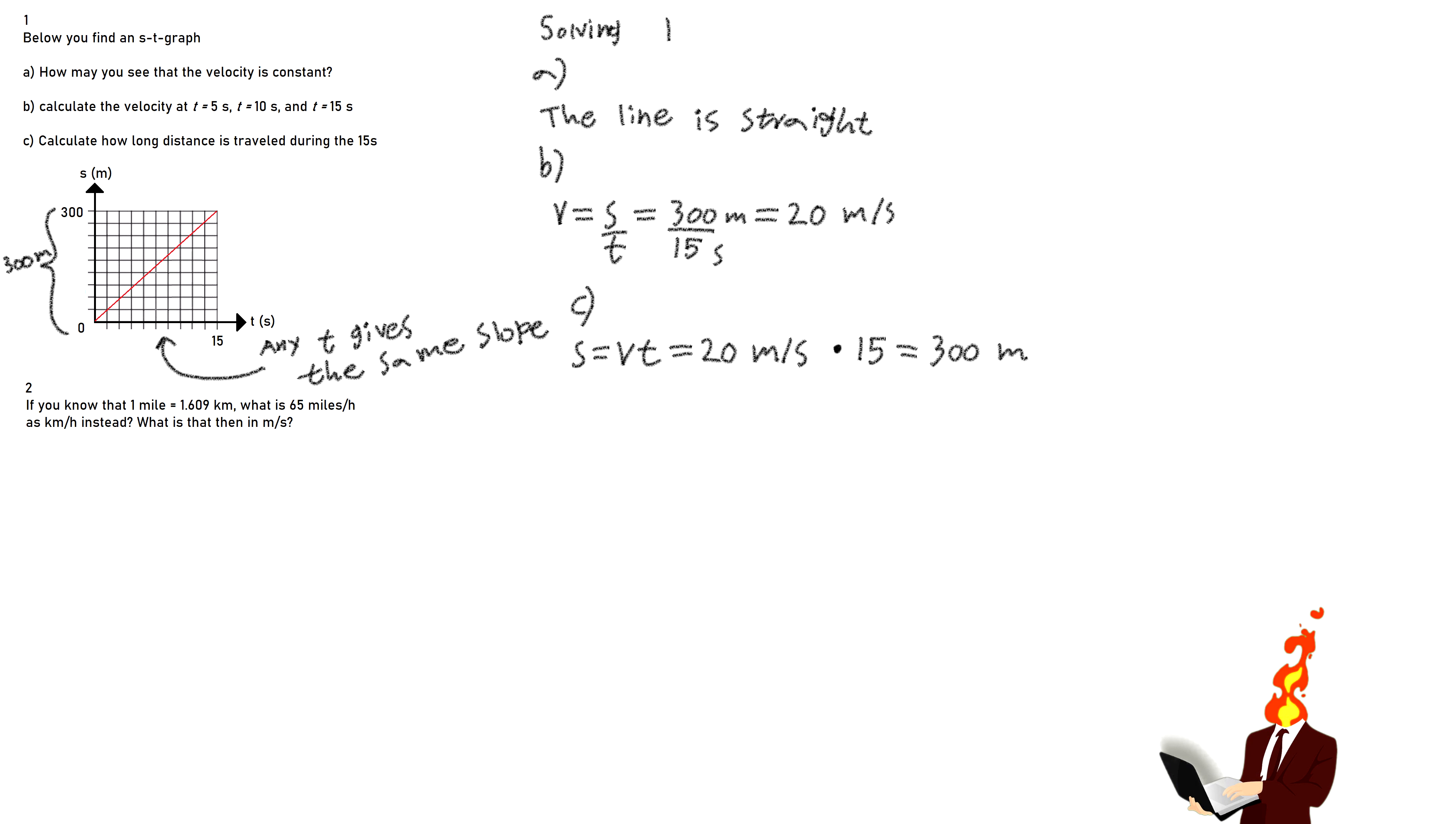You take 300 meters divided by 15 seconds, and you get the answer 20 meters per second.